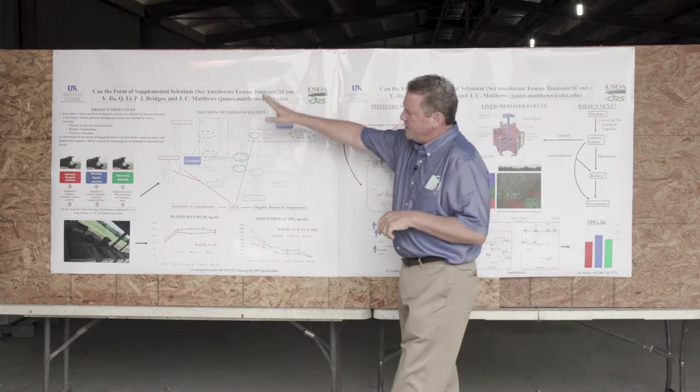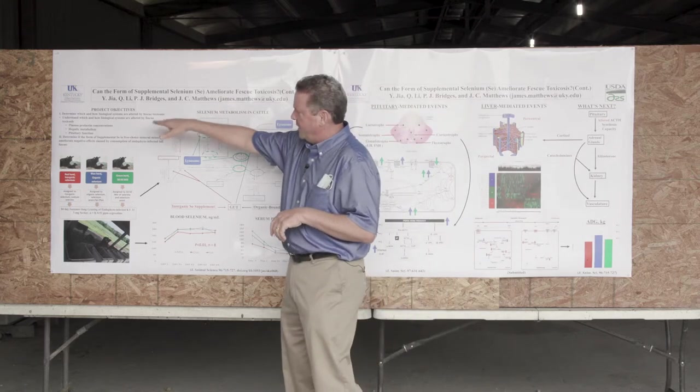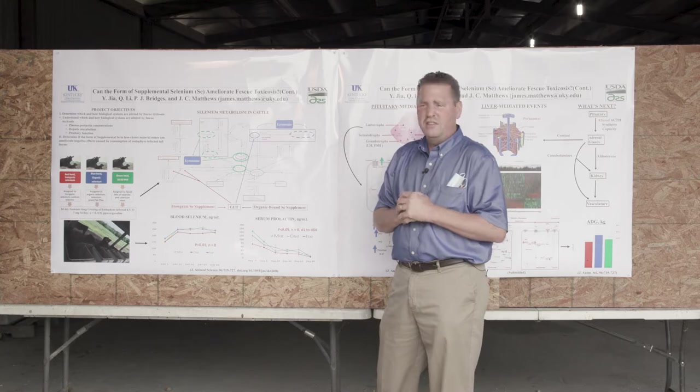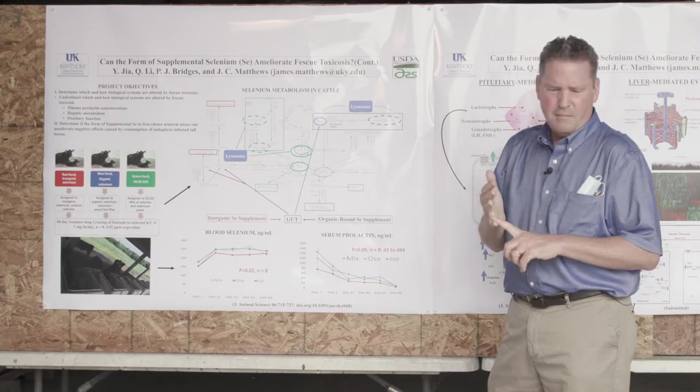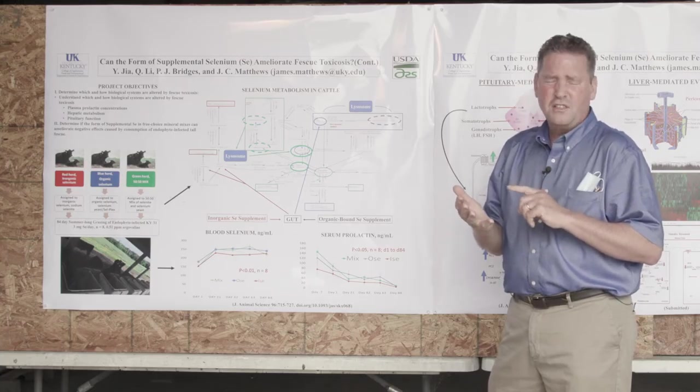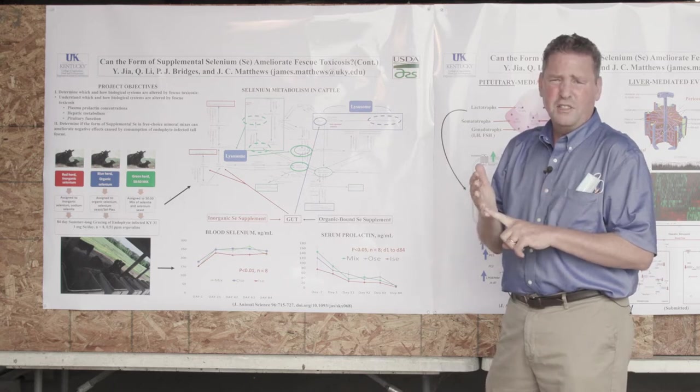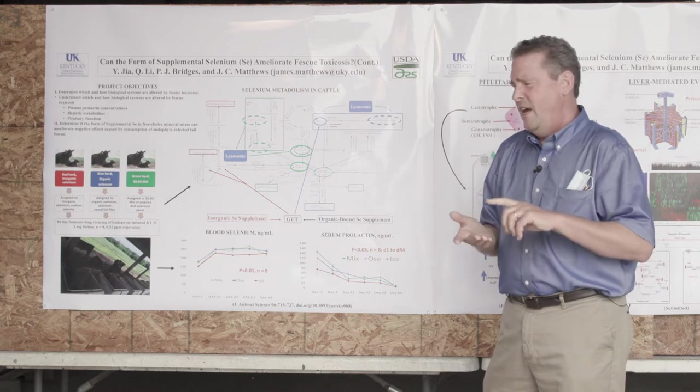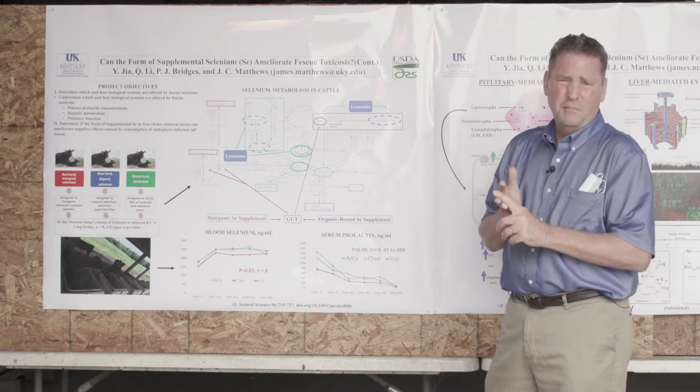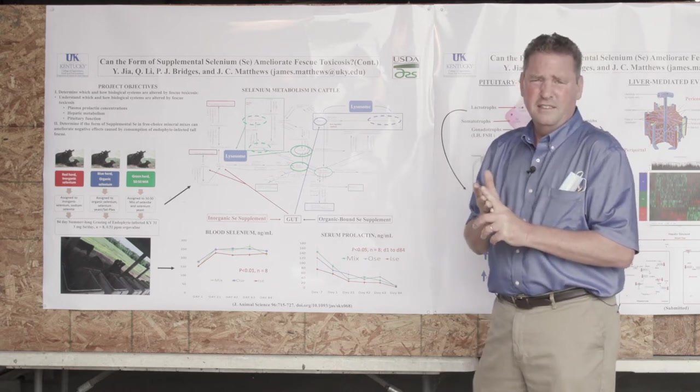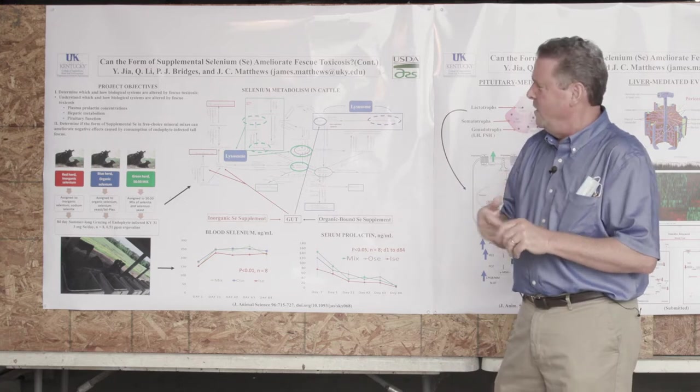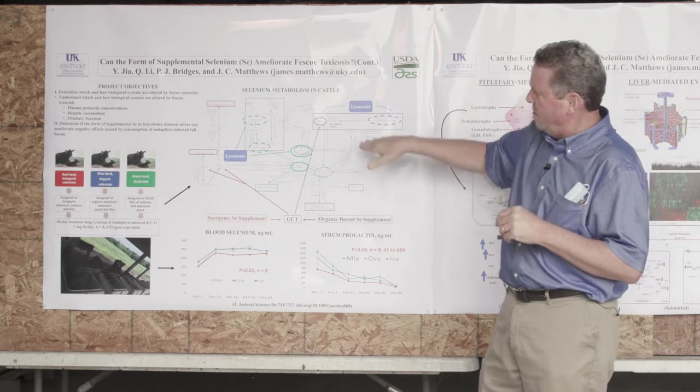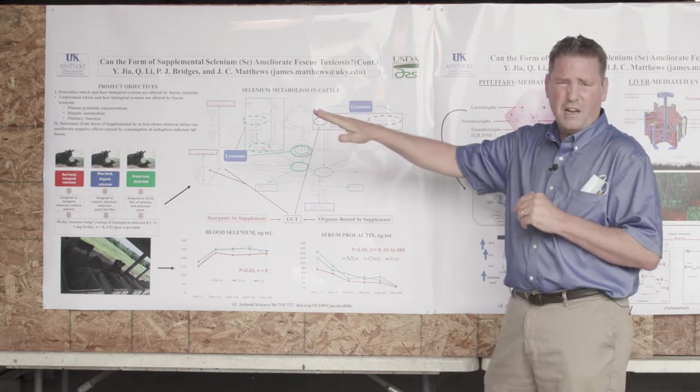Our project objectives is to determine how the biological systems are altered by fescue toxicosis. In the past, you've heard me talk about how our big marker for fescue toxicosis is prolactin, reduced serum prolactin, reduced serum alkaline phosphatase, and ultimately ending up in reduced weight gain on growing steers. In this model, we've been trying to understand some of the other biological systems that are at play.